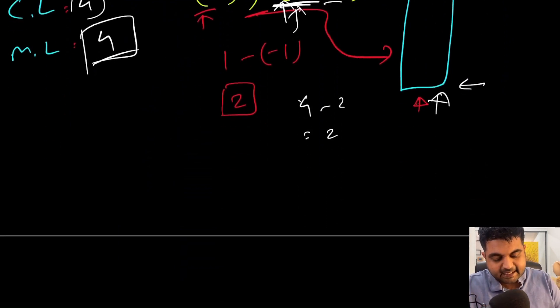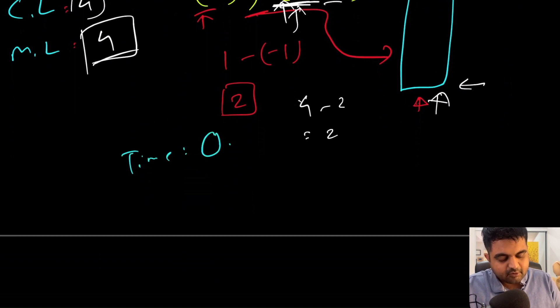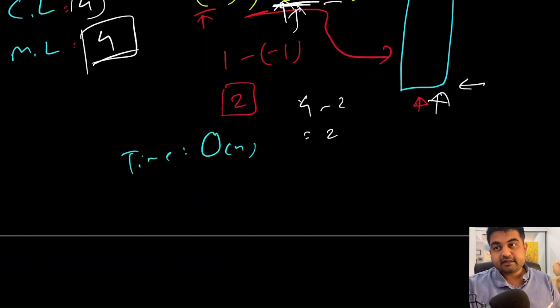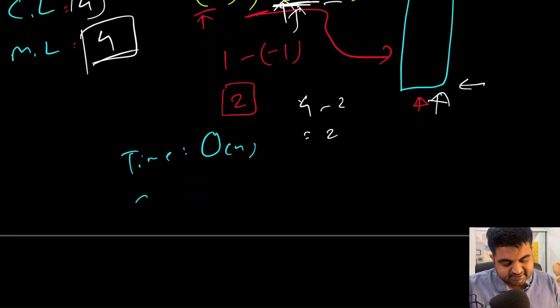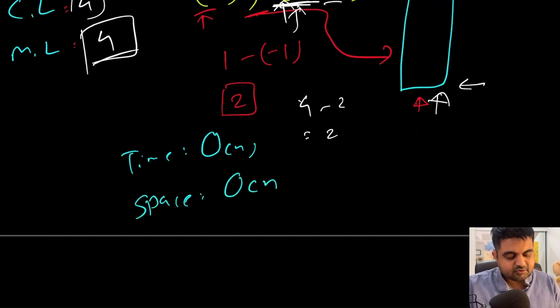For time complexity, because we are simply iterating the given input array just once, the time complexity is O(n). For space complexity, because we are using an extra stack, it will also be O(n).